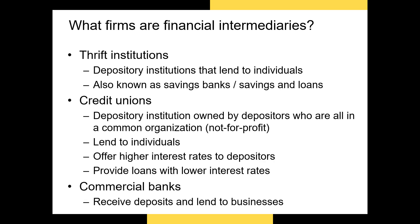We have a huge list of financial intermediaries, but let's talk about some of the most prominent. First, we have thrift institutions, otherwise known as savings banks or savings and loans. These institutions take deposits and then lend out those funds to individuals seeking loans. Next, we have credit unions, which are owned by depositors who are all in a common organization. For example, if you're a Ball State student, alumnus, employee, or professor, you can become a depositor of Ball State credit union.